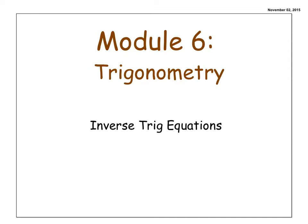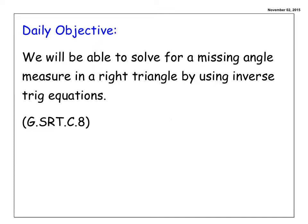Today we are going to be looking at inverse trig equations. We are going to be working with trig equations again today, but instead of solving for missing side measures, today we are going to be solving for missing angle measures. Our main objective is that we are going to be able to solve for a missing angle measure in a right triangle by using inverse trig equations — pretty straightforward and highly connected to what we did yesterday.